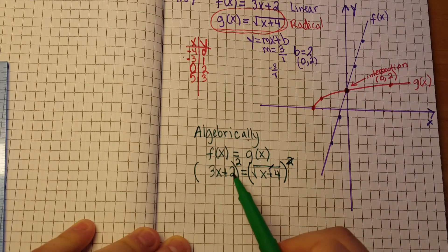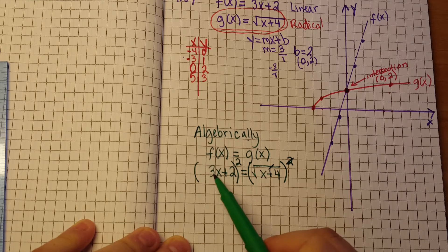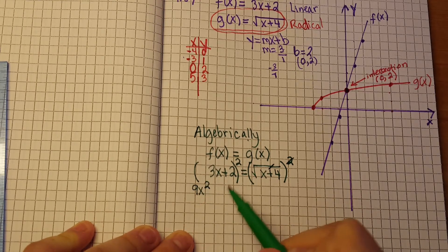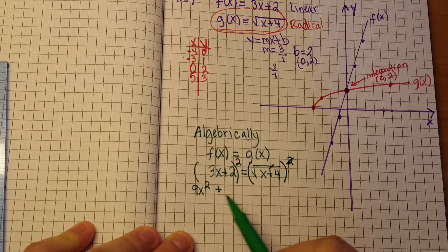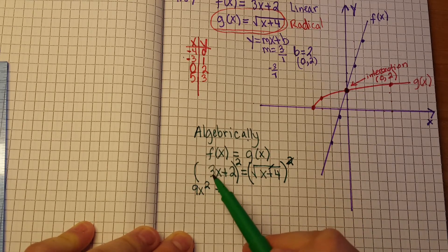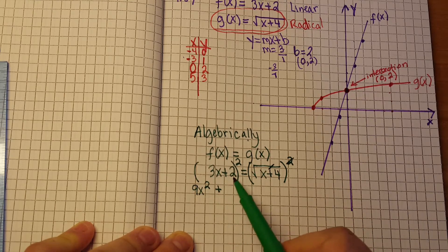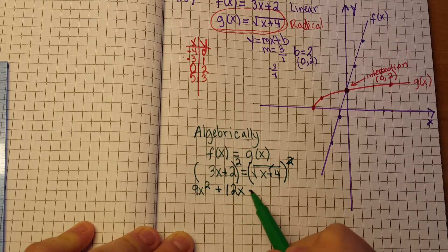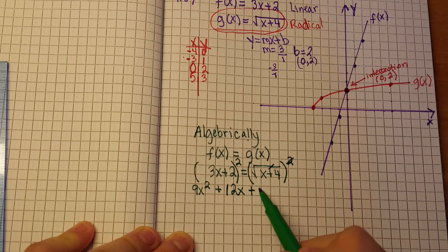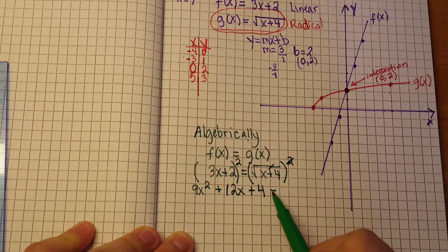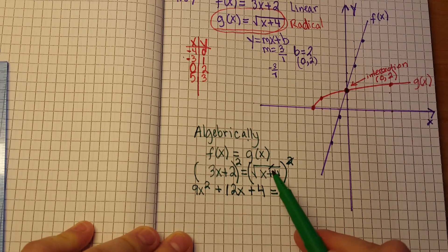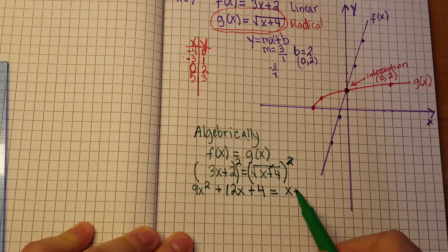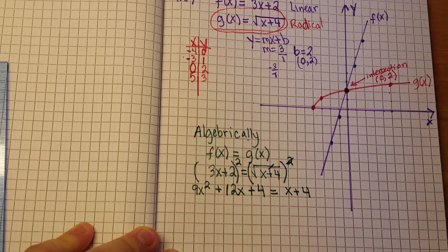Now don't forget, this is a binomial squared on this other side, so that means this is going to give you 9x squared plus the middle term, which is 2 times 3x, that gives us 6x times 2, which is 12x plus 2 squared, which is 4, is equal to, and remember when we squared it, we cancelled out the radical, so now we just get x plus 4 comes out of the radical.